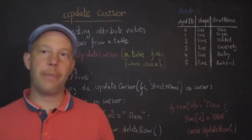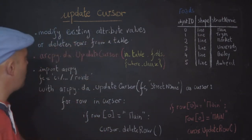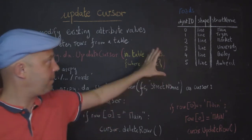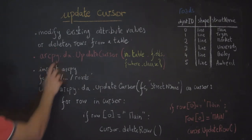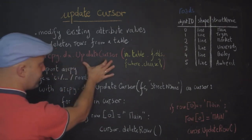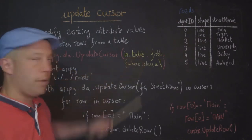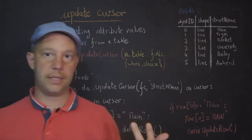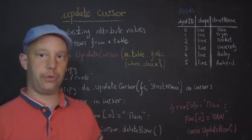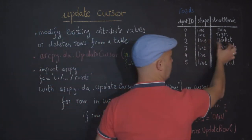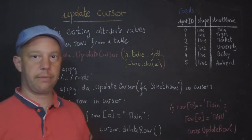The second type of cursor is the update cursor. Update cursors modify existing attribute values or delete rows from a table. The syntax is ArcPy.da.UpdateCursor with the same arguments: the in_table, which can be a feature class, shapefile, or standalone dataset, the fields where you want to make changes, and optionally a where clause or SQL statement.